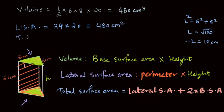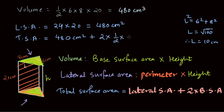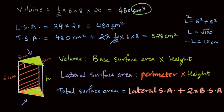For total surface area, we take the lateral surface area plus twice the base surface area. Twice the area of the triangle is 2 × (half × 6 × 8) = 48 cm². So total surface area is 480 + 48 = 528 square centimeters. Note the units: volume is in cubic centimeters and surface areas are in square centimeters. This is how we find volume, lateral surface area, and total surface area for any given solid.